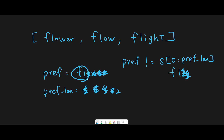One more important thing: what if prefix length reaches zero? For example, if flow is changed to abc, there is no common prefix between flower and abc. In that case prefix length will reach zero, meaning there is no longest common prefix, so we can immediately return an empty string. That is the basic idea to solve this question.